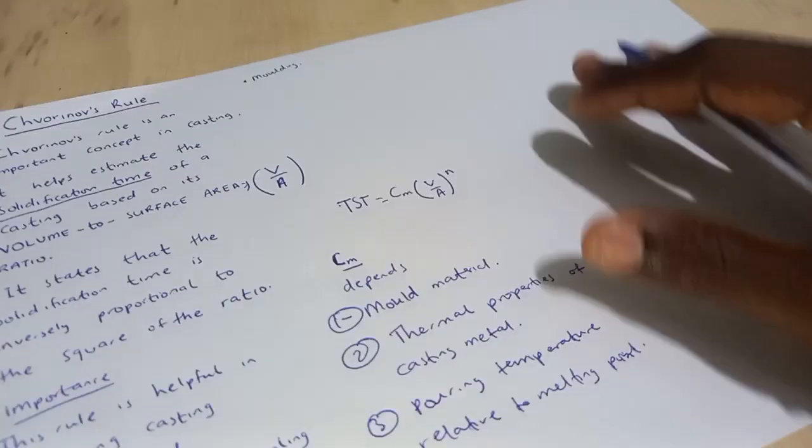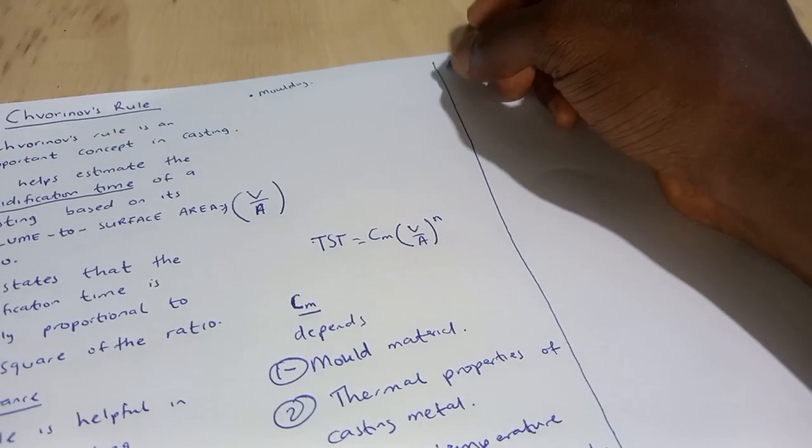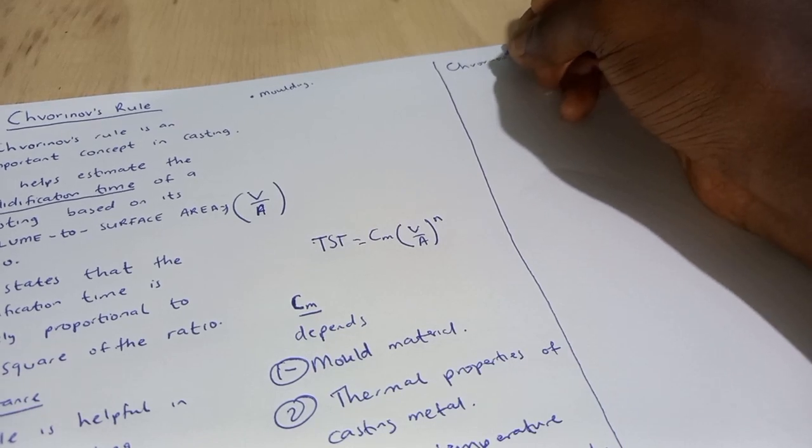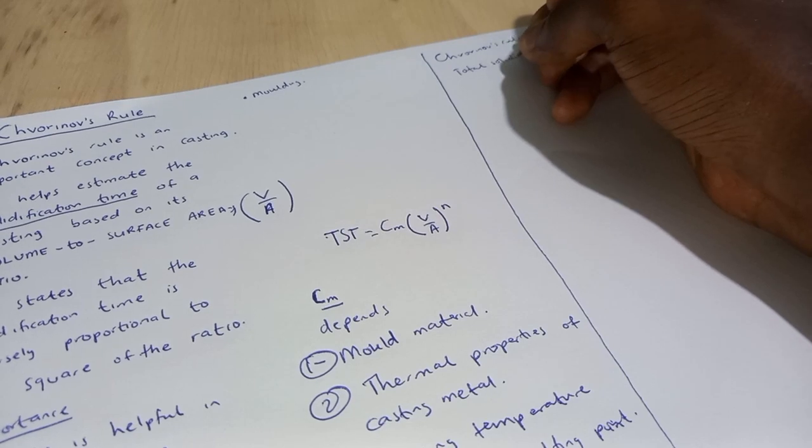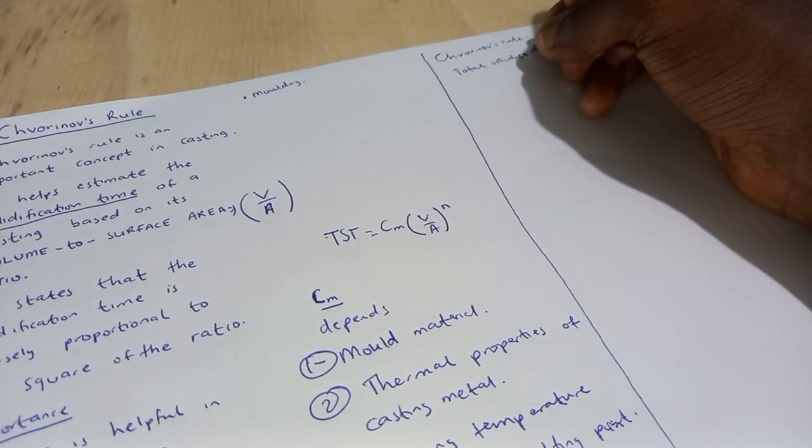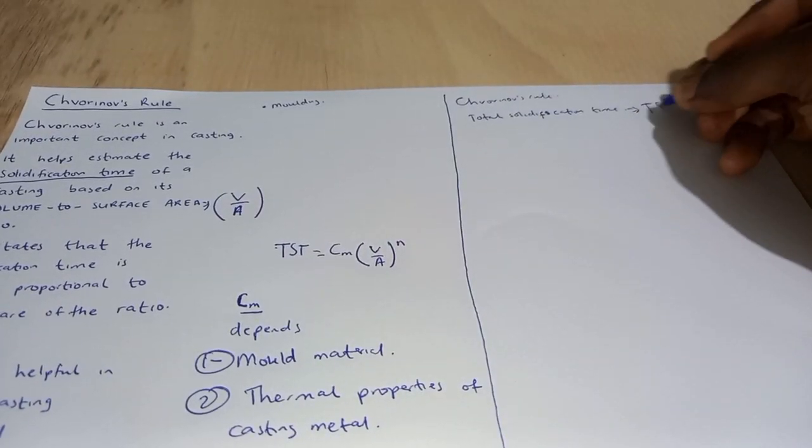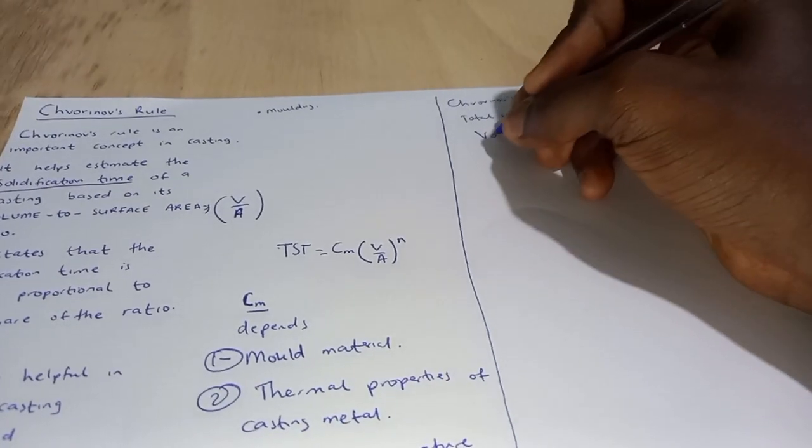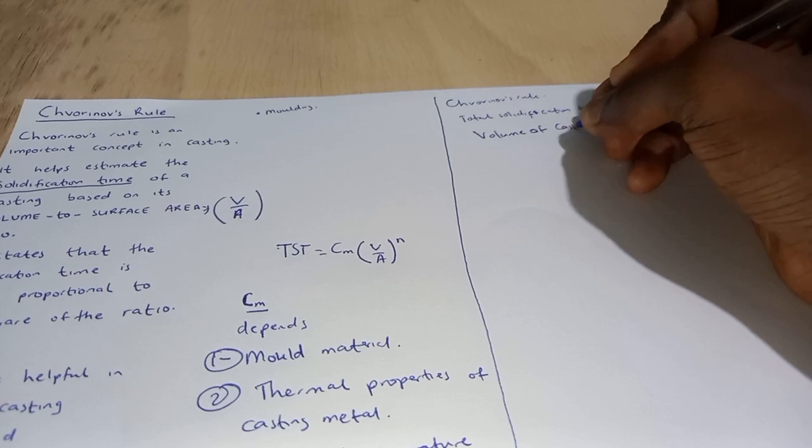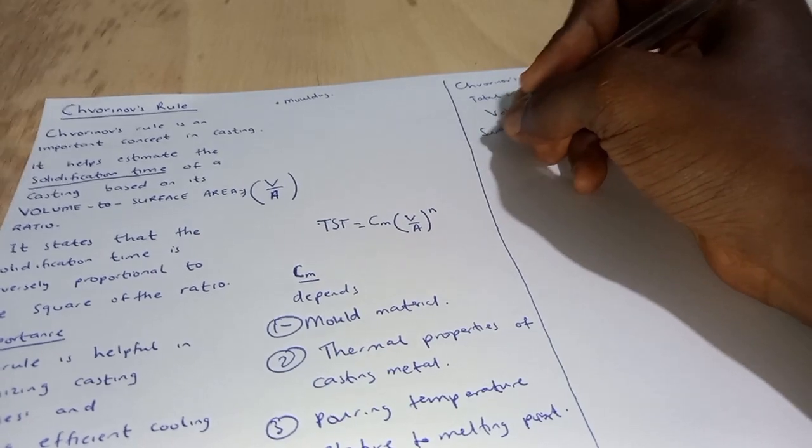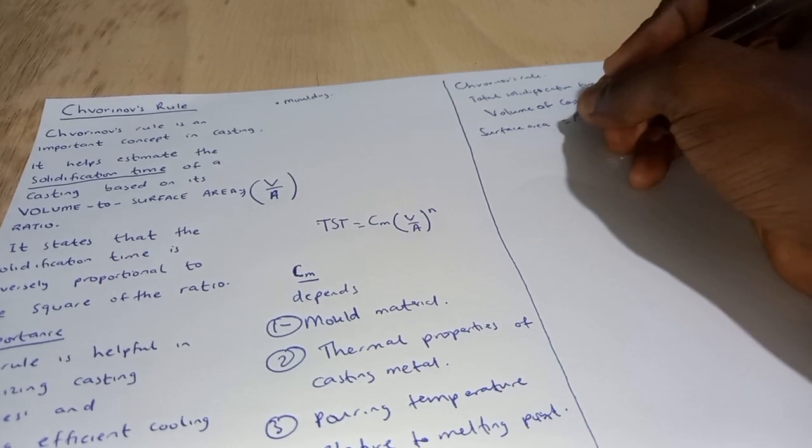So with this, we have the Chvorinov's rule. We have the total solidification. We have the volume of what? The casting. That is V. We have the surface area of the casting exposed to the mold or core. That is the A.